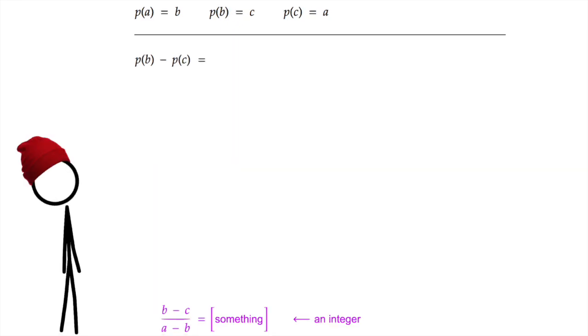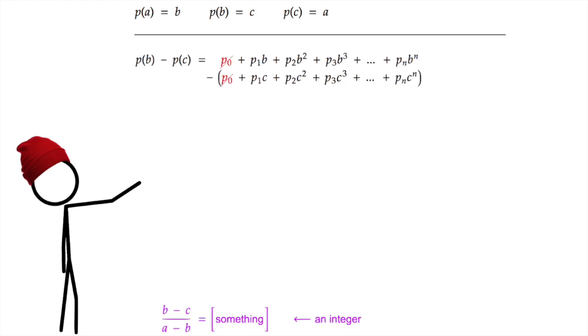Now let's do the same thing over again for p of b minus p of c. Sounds like effort. But not really, because this problem is completely symmetric in a, b, and c, right? We can swap them around and it makes no difference. So we know the same thing will happen. p of b is p naught plus p1b plus p2b squared plus p3b cubed plus dot dot dot plus pnb to the n. And p of c is p naught plus p1c plus p2c squared plus p3c cubed plus dot dot dot plus pnc to the n. Now cancel those p naught terms and we get a nice b minus c term that factors out.